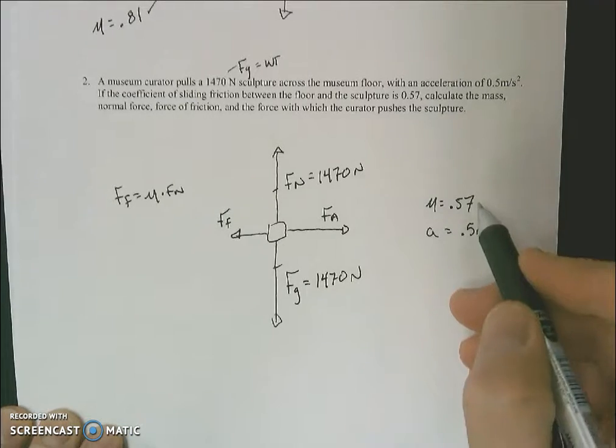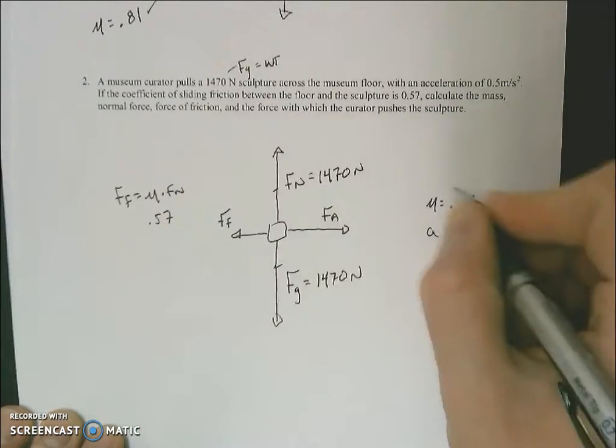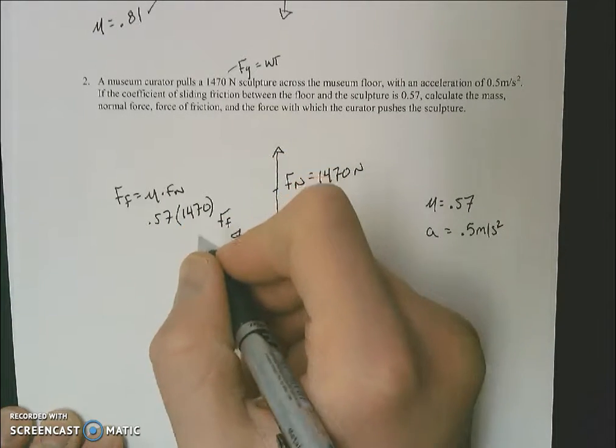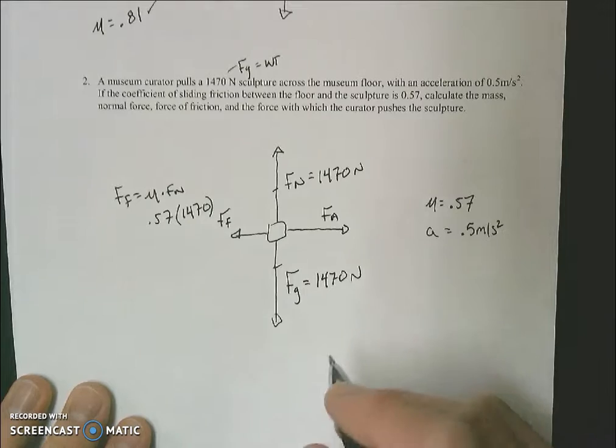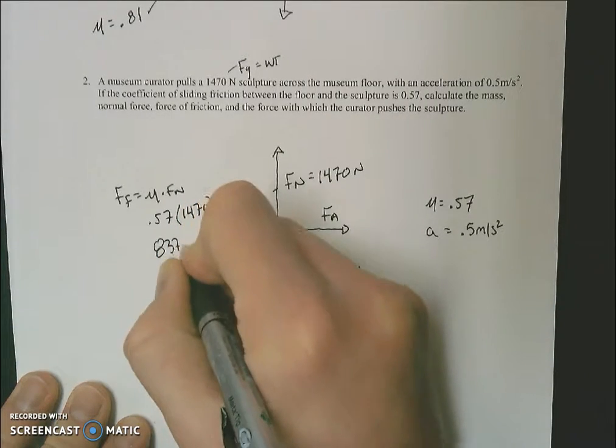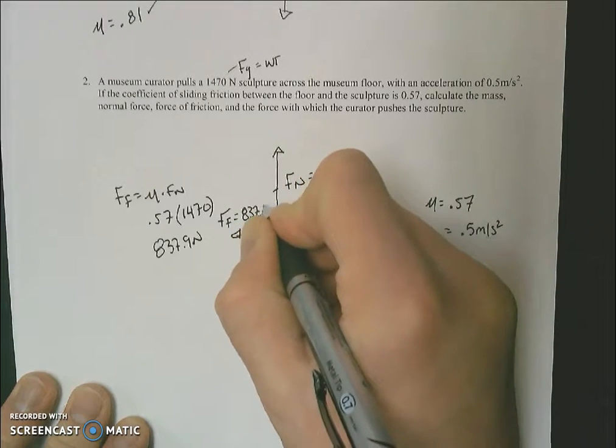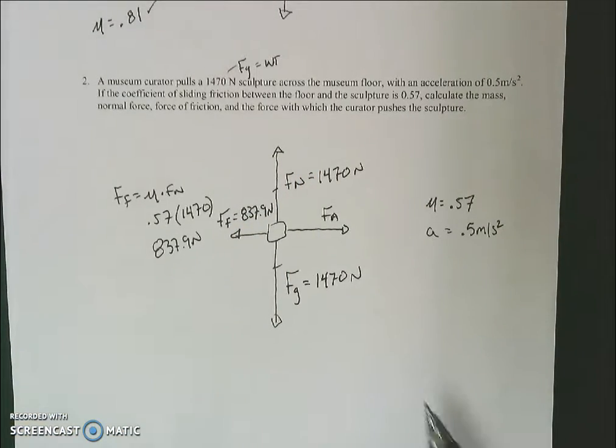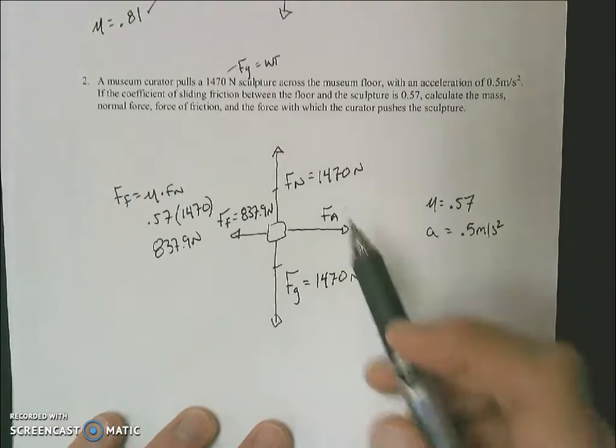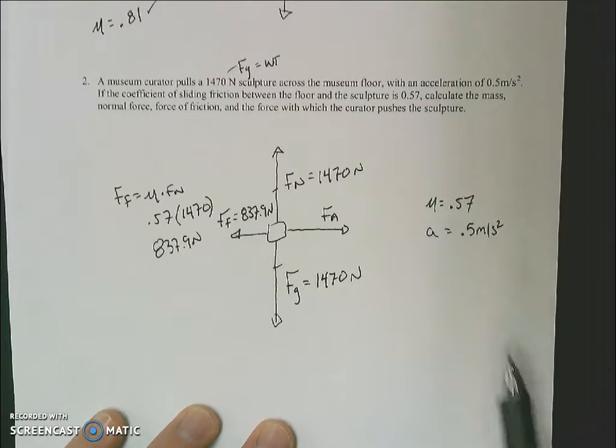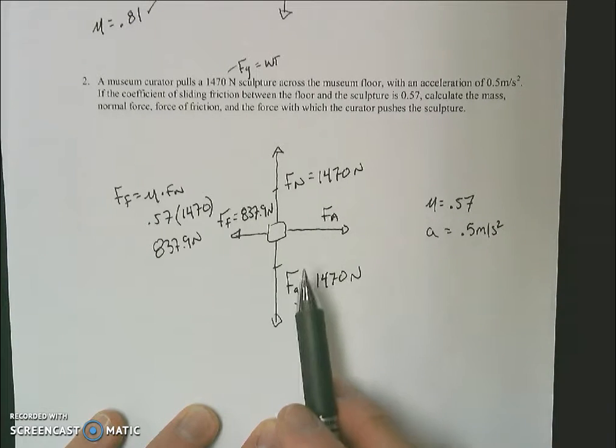It looks like it's pulling at 0.05 meters per second squared. Since that's positive, there's got to be a force applied. Since there's an acceleration rightward, that means my force of friction is going to be less than that. I'm not given a force applied. I'm not given a force of friction. But I am given mu, which is 0.57. I could use my normal force and my coefficient of friction to solve for my force of friction. This is going to be 0.57 times my normal force. That ends up being 837.9 newtons. I cannot say these are equal because there is an acceleration.